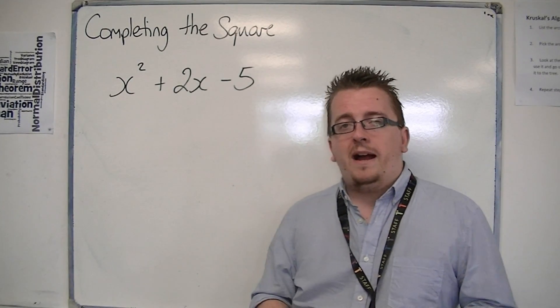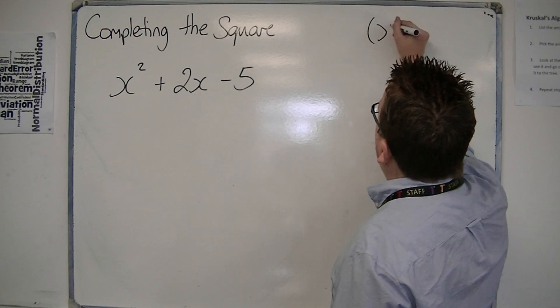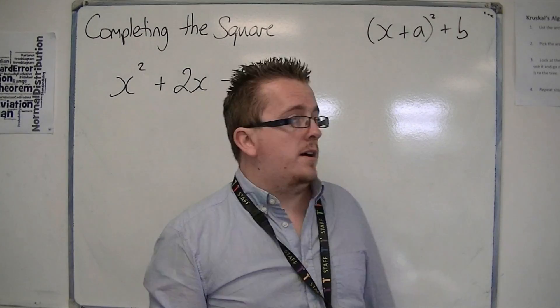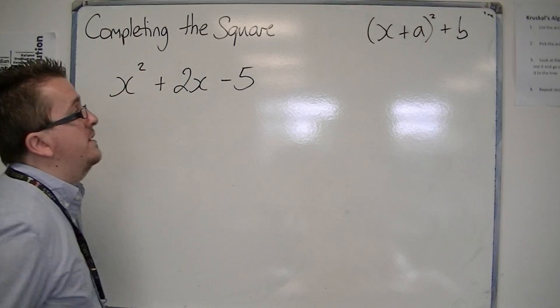Now, completed square format, as you've seen in the previous videos, looks like (x + a)² + b. So there are these numbers, a and b, that we need to find so that it fits into this format.